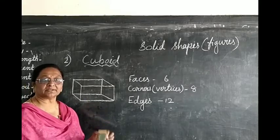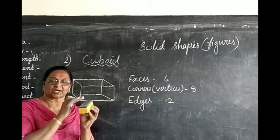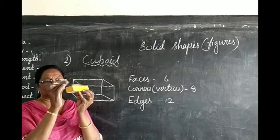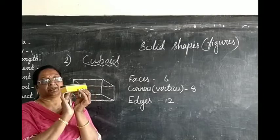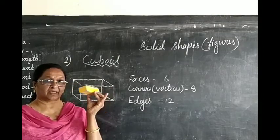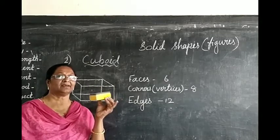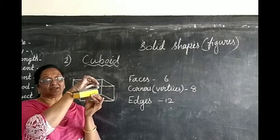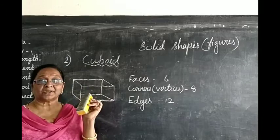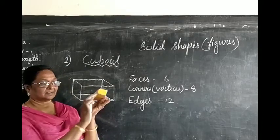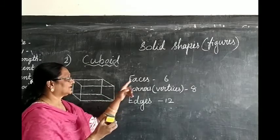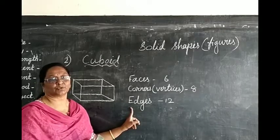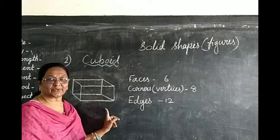Now what are the main features to learn? This cuboid is also having six plain faces — top, bottom, and four sides. Then how many corners are there? Eight corners. And how many edges are there? Twelve edges. So: how many faces? Six. How many corners? Eight. And how many edges? Twelve.